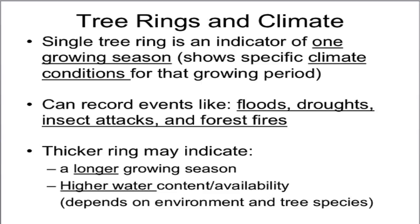Interestingly, tree rings can also indicate very brief events in climate history, like floods, droughts, fires, and — what I think is pretty cool — insect attacks. Like the current insect attack we're having here in Minnesota due to a bug called the emerald ash borer. What they're doing is they're killing all of the ash trees here in Minnesota.